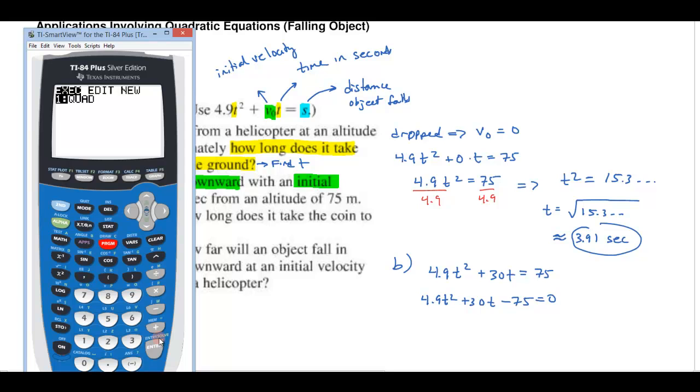So let me go to the program button and I have programmed in here the quadratic formula and it'll ask me for A, B, and C. So A is 4.9, by the way I do have a video showing how to program that into your calculator so look for that if you don't have it programmed in your calculator. My B value is 30 and my C value would be a negative 75.